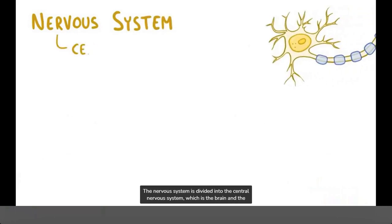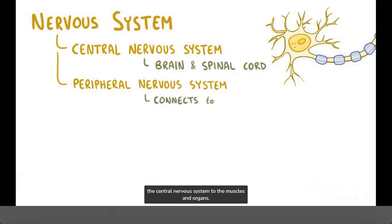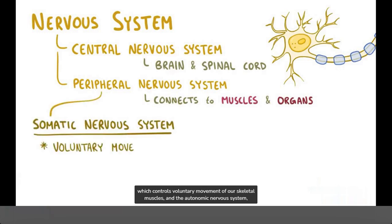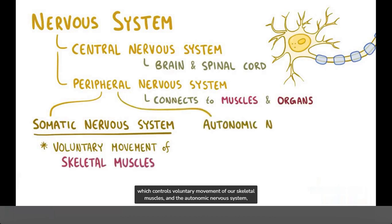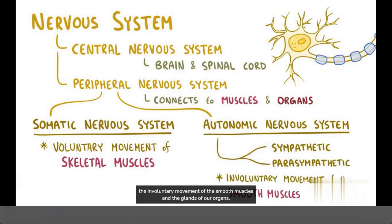The nervous system is divided into the central nervous system, which is the brain and spinal cord, and the peripheral nervous system, which includes all the other nerves that connect the central nervous system to the muscles and organs. The peripheral nervous system can then be further divided into the somatic nervous system, which controls voluntary movement of our skeletal muscles, and the autonomic nervous system, which is further divided into the sympathetic and parasympathetic, and controls the involuntary movement of the smooth muscles and the glands of our organs.